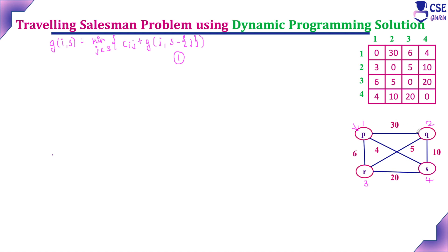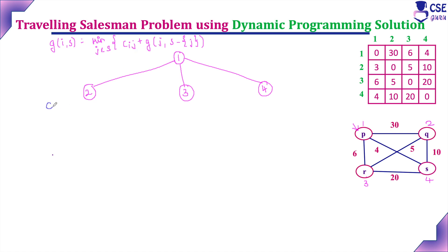From vertex 1, the salesman must visit vertices 2, 3, and 4 exactly once and return to the starting city. From vertex 1, the choice may be to visit vertex 2 (Q), vertex 3, or vertex 4. The function at this level is: c(1,2) + g(2, {3,4}), or c(1,3) + g(3, {2,4}), or c(1,4) + g(4, {2,3}). The cost from 1 to 2 is 30, 1 to 3 is 6, and 1 to 4 is 4.